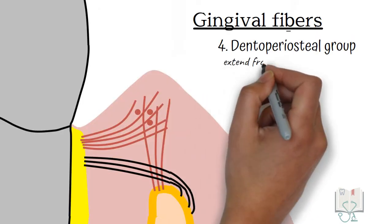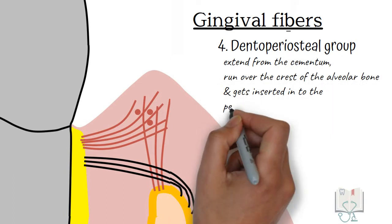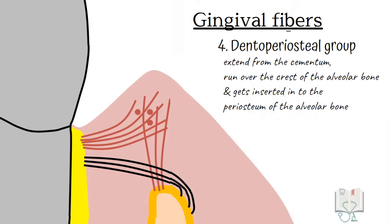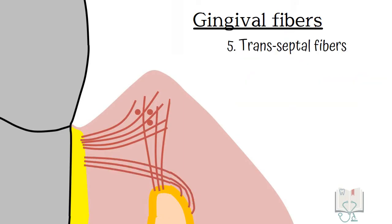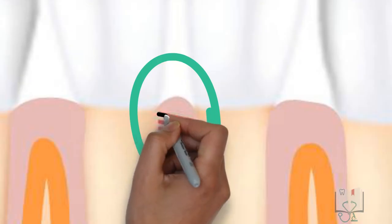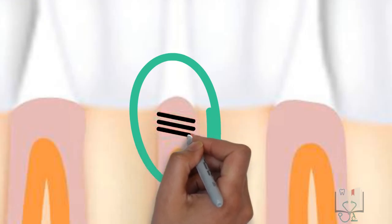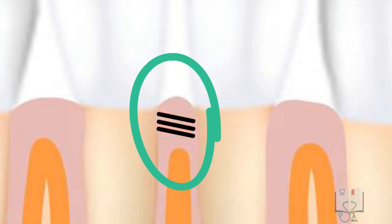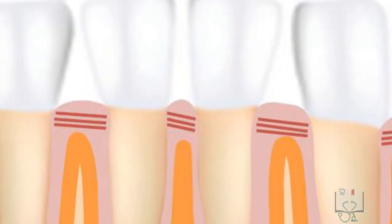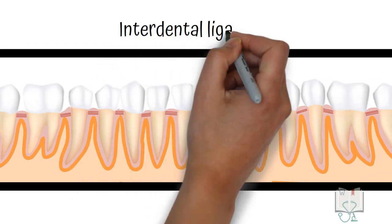Dento-periosteal group. These fibers extend from the cementum, run over the crest of the alveolar bone and get inserted into the periosteum of the alveolar bone. And finally, transseptal fibers. These fibers are limited only in the interdental gingiva. These fibers extend from one tooth, run over the crest of interdental alveolar bone and get inserted into the adjacent tooth. Together, these fibers of all the teeth in the arch form the transseptal fiber system, collectively being called as the interdental ligament, which connects all teeth in the arch.